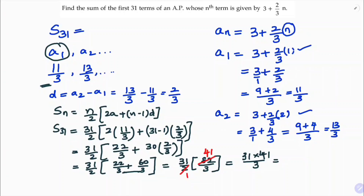So 31 into 41. If you multiply 31 into 41, you get 1271. So the answer is 1271 by 3. This is the sum of 31 terms of the AP. If you want you can write it in decimal also, but you can leave it as 1271 divided by 3. This is the final answer.